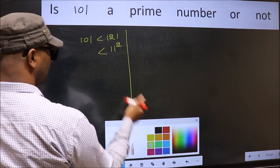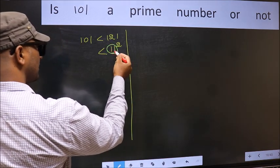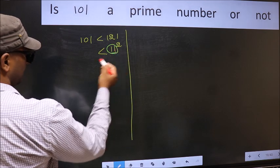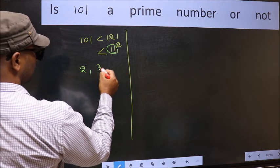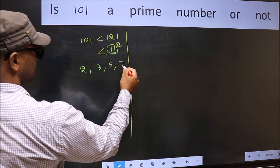Now you write all the prime numbers less than this number. They are 2, 3, 5 and 7.